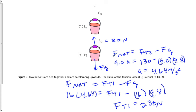Now if we compare that to the 130 of force tension 2, it kind of makes sense because force tension 1, again, must accelerate both buckets at 4.64 meters per second squared, where force tension 2 only has one bucket to accelerate at that value.